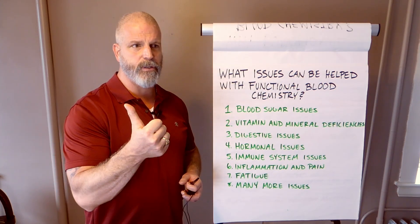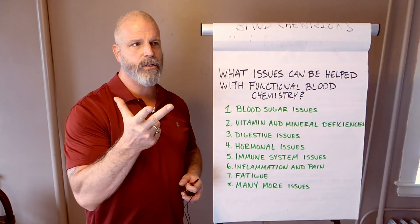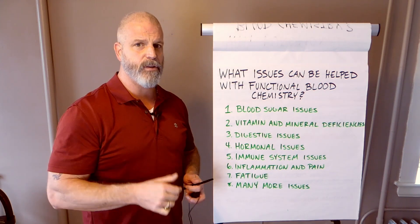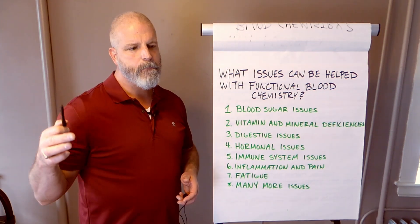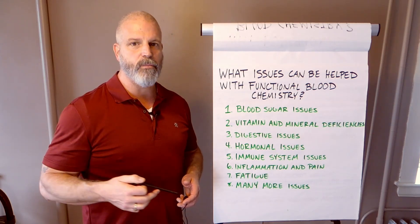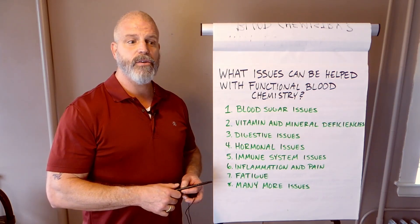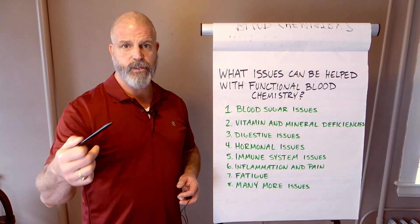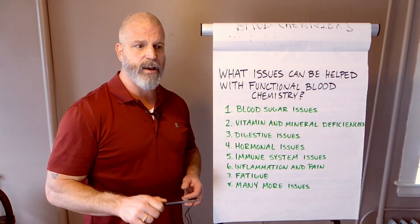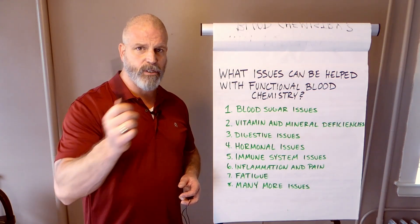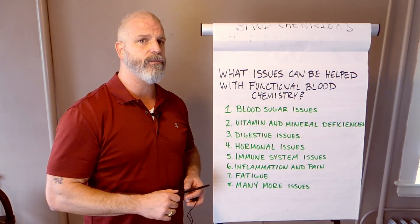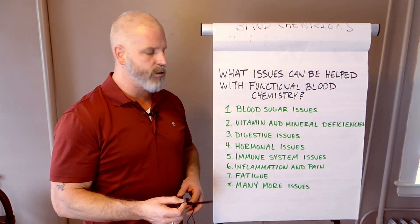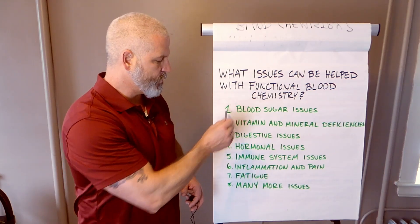There's what's called neutrophils, lymphocytes, monocytes, eosinophils, and basophils. And depending on what the ratios are, they can tell you what your body is challenged with. Is it an acute infection? Is it a chronic infection? Does it look more bacterial? Does it look more viral? Does it look more like a parasite? Does it look more like a fungus? All this type of information you can get from functional blood chemistry.